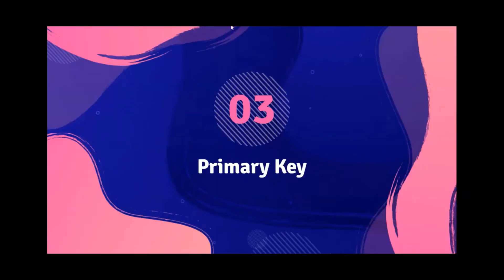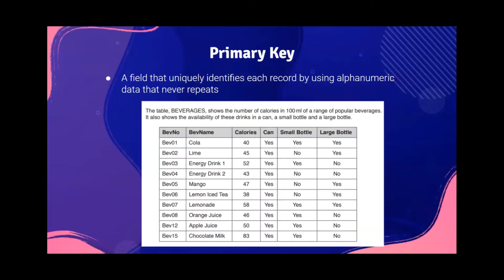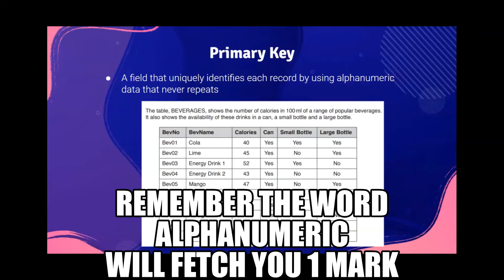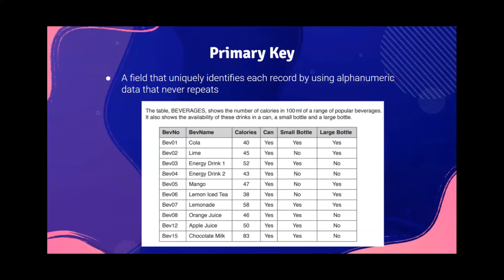Next, primary key. What is a primary key? A primary key is a field that uniquely identifies each record by using alphanumeric data that never repeats. For example, in this table here, the primary key is the BEV number — the first field — because it has data that never repeats.